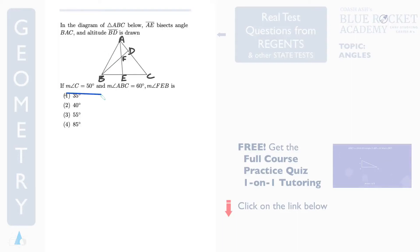In this problem, you're given measure angle C is 50 degrees. So this angle here is 50 degrees. And then you're given ABC, which is this entire angle, equal to 60 degrees.